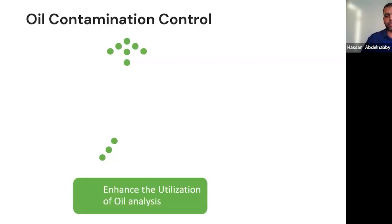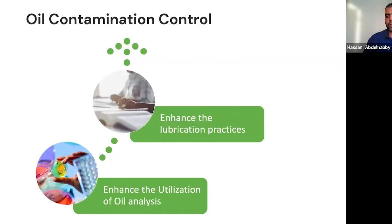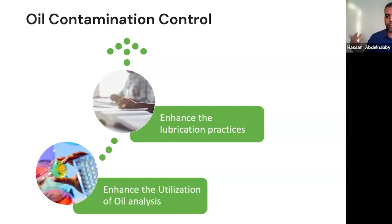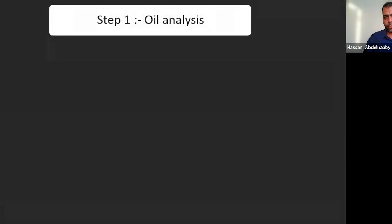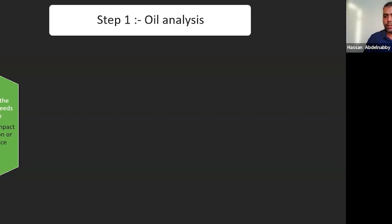Oil contamination control is a journey that starts with enhancing oil analysis utilization while simultaneously enhancing lubrication practices. If you enter a factory and don't know where to start, work on both edges — see what you are attacking and attack it properly. The first stage is oil analysis: you need to know where you are. Determine the assets you need to care about, assess their criticality, and decide whether to include or exclude them at the start of your program.